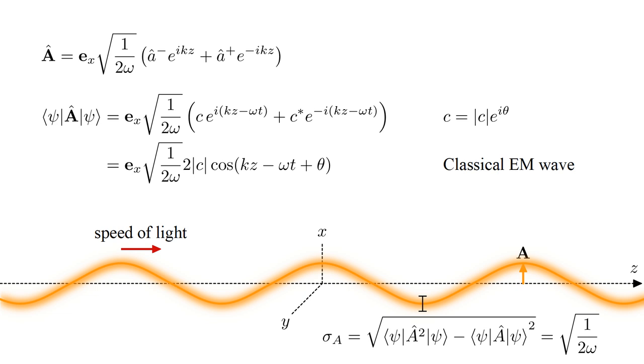The size of these quantum fluctuations is quantified by the field's root mean square deviation, σ_A. This is the square root of the expectation value of A squared, minus the square of the expectation value of A. Following through the somewhat lengthy calculations, we find the value is square root one over 2ω. This is independent of the constant c, hence of the classical field amplitude, and of the expected number of photons present in the mode.